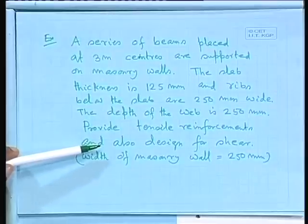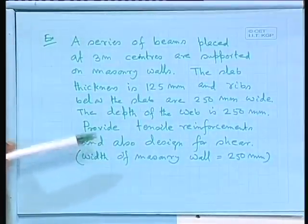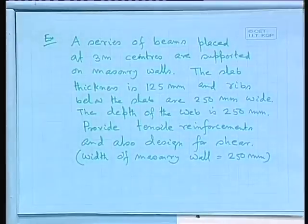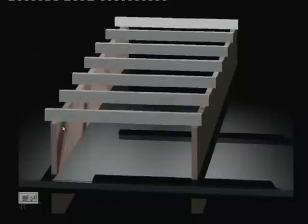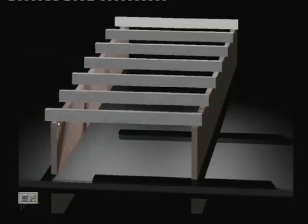We shall provide tensile reinforcement at the bottom. This beam is simply supported over the masonry walls — no moment develops at the supports. For frame structures with columns, moment would develop at supports, but here it is simply supported. We also need to first determine the loading.